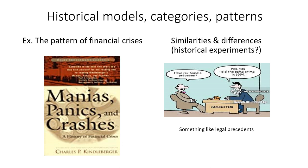Historical experiments — with a question mark — can history do experiments for us? Of course not, not like lab experiments. But sometimes history unfolds accidentally, unintentionally, in a way that it's almost like a lab experiment happened anyway. We'll see some examples of this in class. History sometimes mimics an experiment, and when you can pick up on that fact, it can be a powerful tool as well. You just have to be lucky that such things happen, because they're never deliberate experiments.